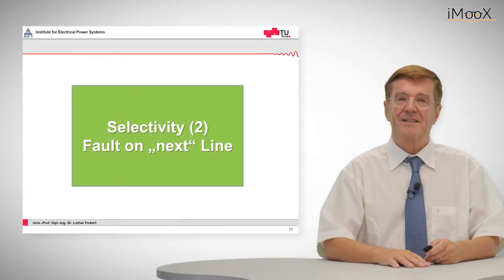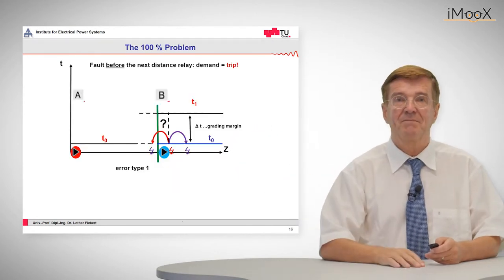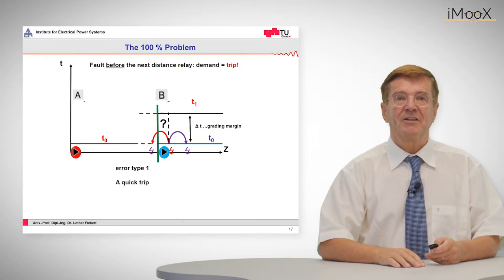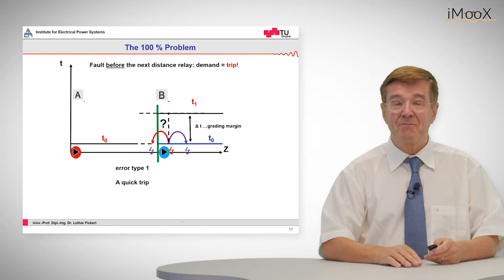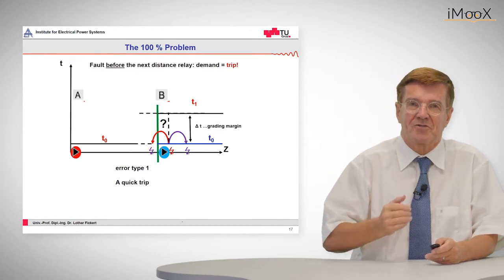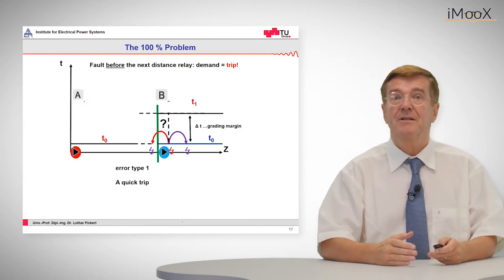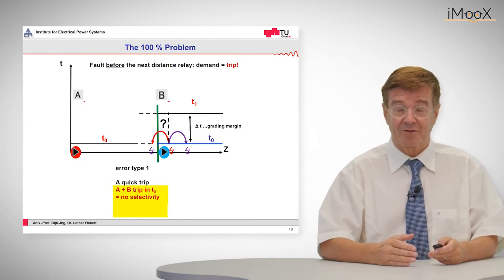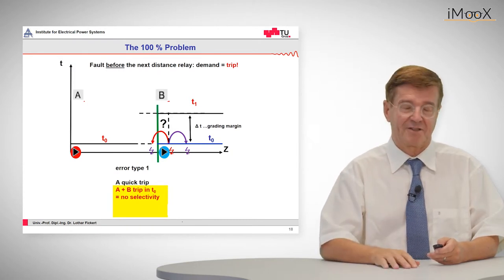Now let's look at the situation if we have a fault on the next line. That means the fault is behind bus bar B. So if we have error type 1, that means that the fault moves apparently towards relay A, relay A thinks that it is his own fault and will trip. Relay B in any case will trip as well and then we have two trips for one fault and that is not selective.